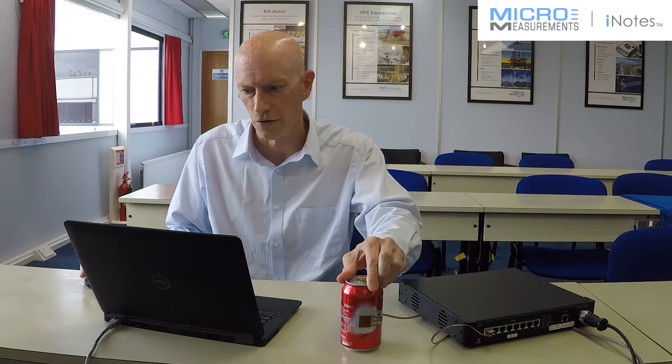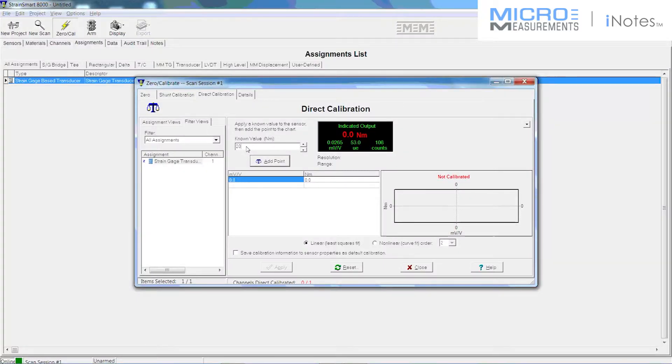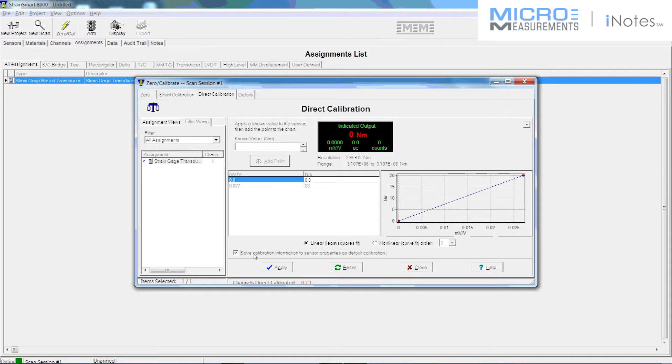I can then add 20 Newton meters. And I'm just going to twist the Coke can using my hand here. Not a calibrated input obviously but just for principle. And I'm going to add the point. At which point it takes the millivolt per volt reading. And it puts that against the known value that I've put there, 20 Newton meters. If I save the calibration information to the sensor properties. I will now then save that against the sensor. So what I left blank earlier is now populated with the values that I've captured here.